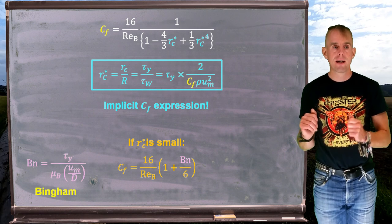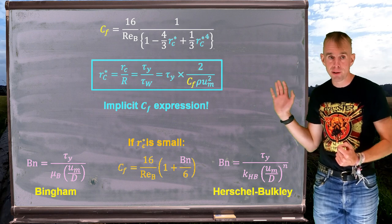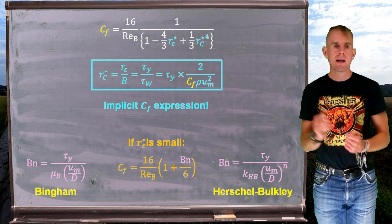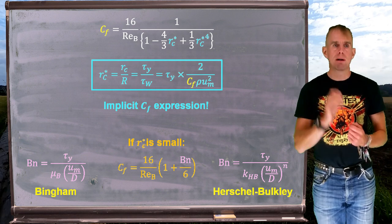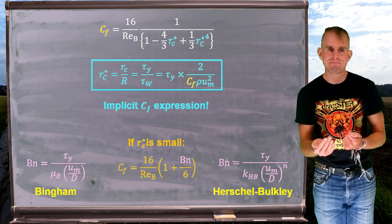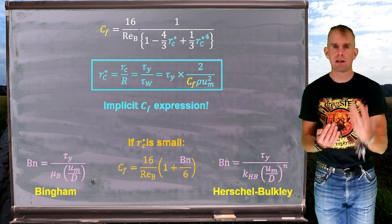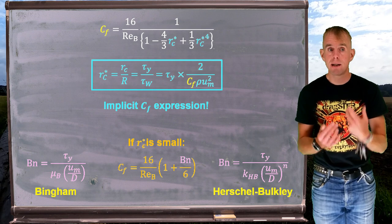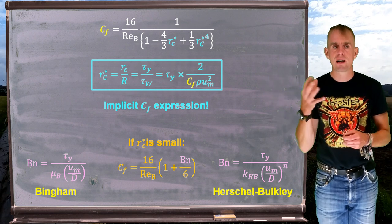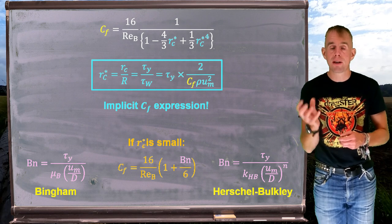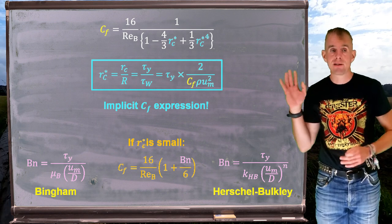The Bingham number is the ratio of my yield stress to my viscous stress — I've written it in terms of both a Bingham fluid and a Herschel-Bulkley fluid; note they are different. If we remember that R_C* relates to τ_y and to τ_w, and the Bingham number is written as τ_y divided by a group of terms that look very much like a Bingham Reynolds number, then we can see how we get from the expression involving R_C* via τ_y, with c_f equal to 16 over Bingham Reynolds number substituted in, to arrive at this expression.